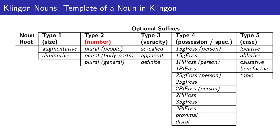If a type 2 suffix is present, it provides information regarding number. If the noun root is a person, there is a plural type 2 suffix that encodes that information. If the noun root is a body part, there is a different plural suffix. And if the noun root is neither a person nor a body part, there is a third different plural suffix.